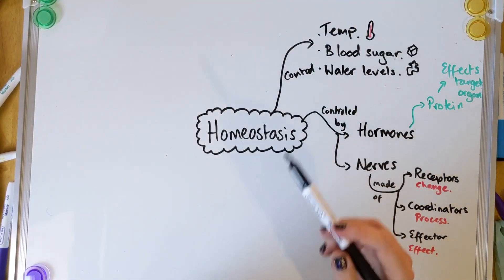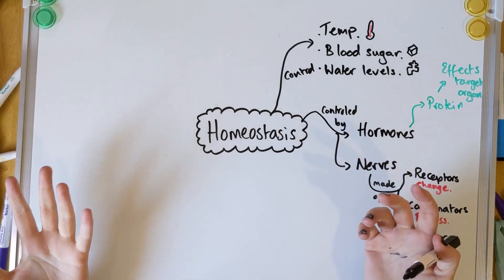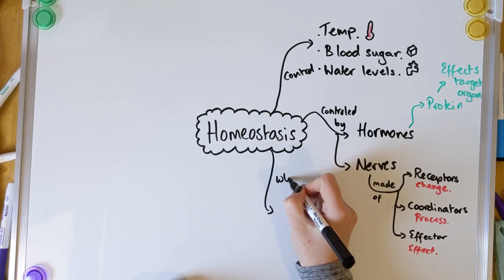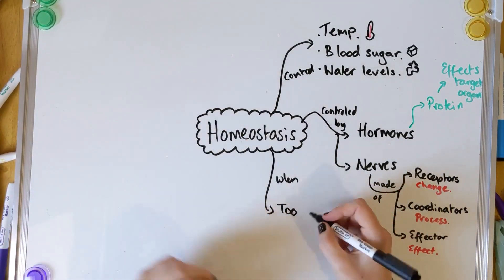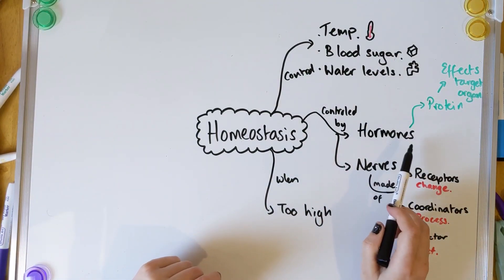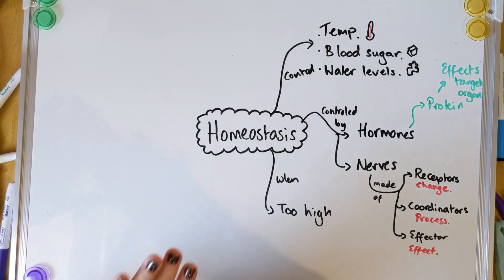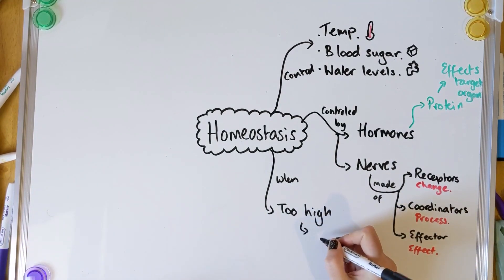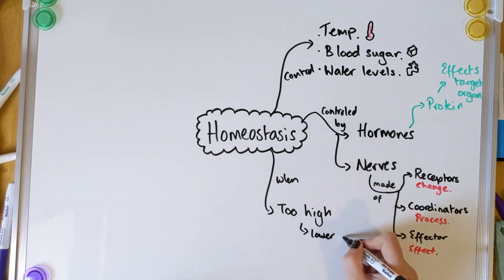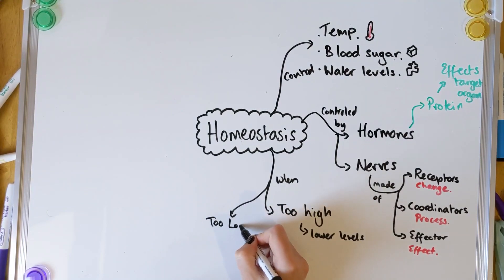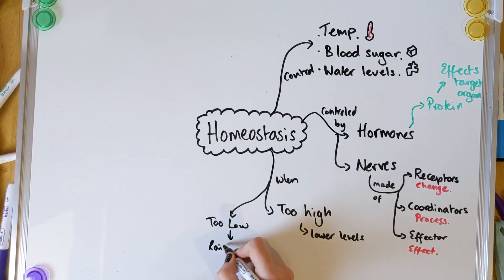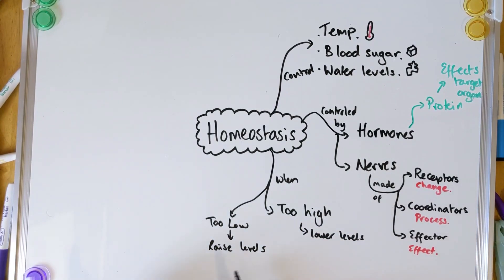Going back to homeostasis — it controls these three conditions, but you need to know generally what happens when those conditions get too high or too low. When conditions get too high — so for example, you're too hot or you've had too much sugar in your diet — your body would use those hormones and nerves to bring about the change to bring you back to that stable level. So if it's too high, it's going to lower levels, be that water or sugar. And if it's too low, it's going to raise them up. For example, if you don't have enough glucose, you can't carry out respiration, so you'll feel tired, and you're going to have to raise those levels.